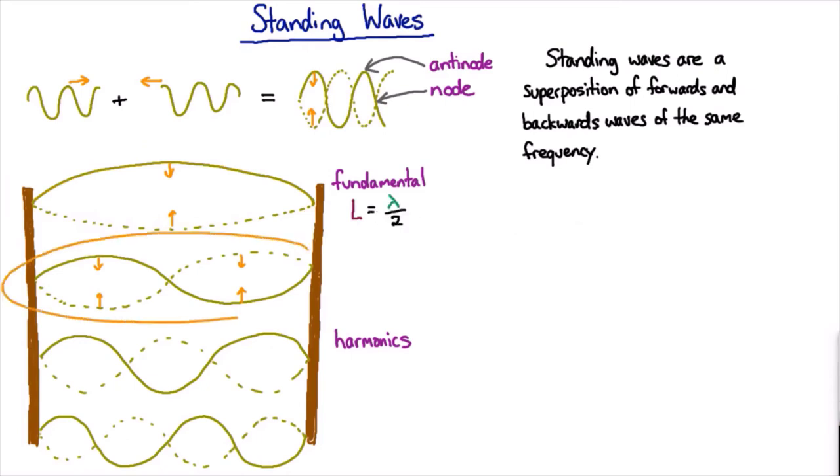In this case, the length of the string is precisely one wavelength. In this case, we have one wavelength there and then another half. And then we have two full wavelengths, and so on.